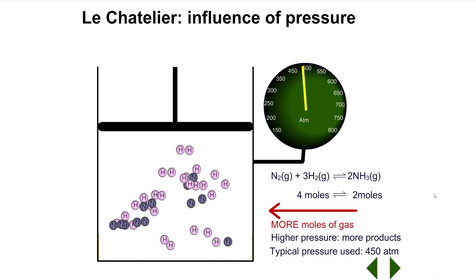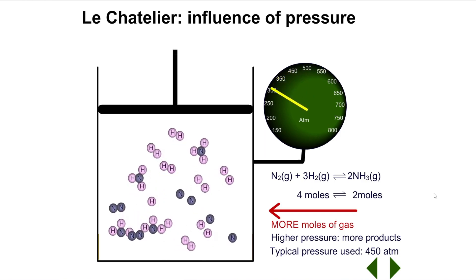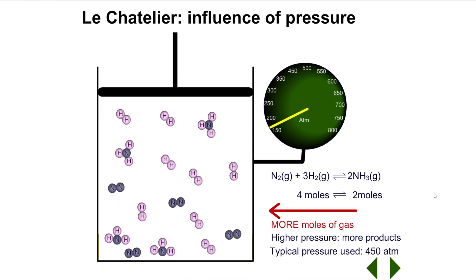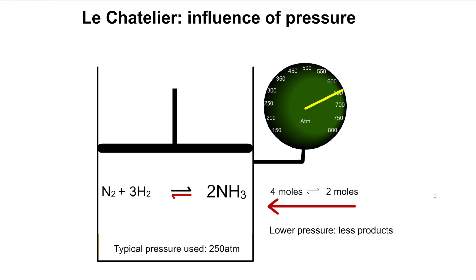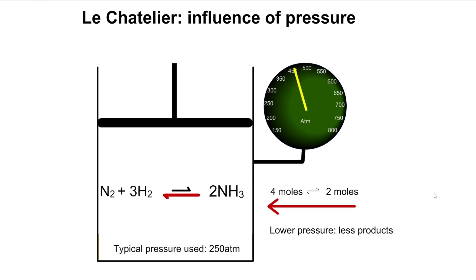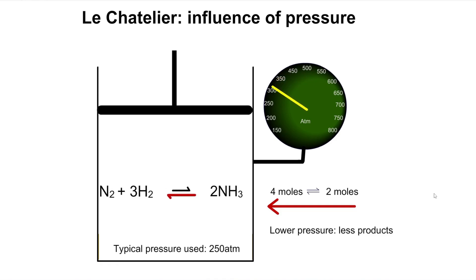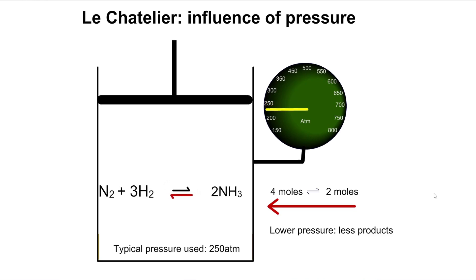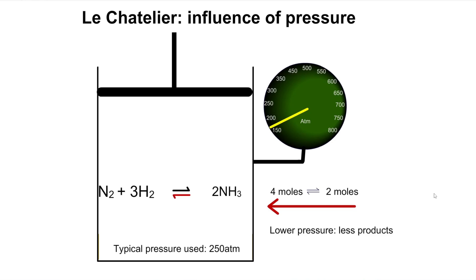Decreasing pressure decreases the crowding of gaseous molecules, and the system will respond by increasing their crowding by forming more molecules. In the Haber process, that means for a while the reverse reaction will occur at a higher rate than the forward reaction. The reverse reaction changes every two molecules of ammonia into four molecules — one nitrogen and three hydrogen molecules — causing the amount of ammonia to decrease and the amount of nitrogen and hydrogen to increase. After a while, a new dynamic equilibrium is reached where the rates of both forward and reverse reactions are equal and the amounts of reactants and products remain constant. However, compared to before, there will now be less ammonia present at equilibrium, though the equilibrium constant value Kc will be the same as it was in the original equilibrium.